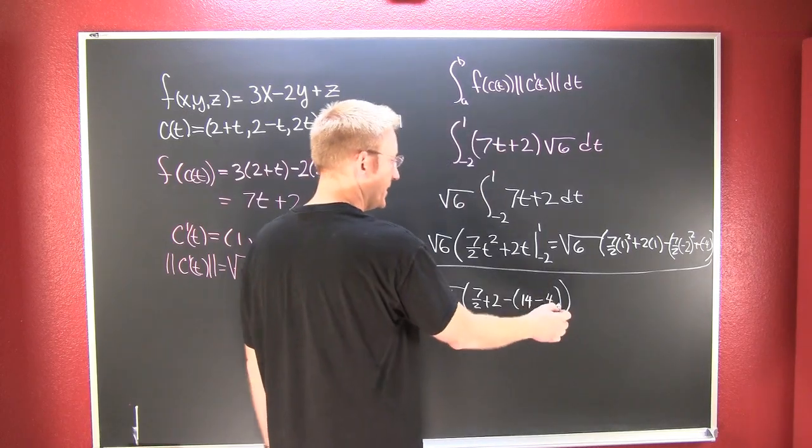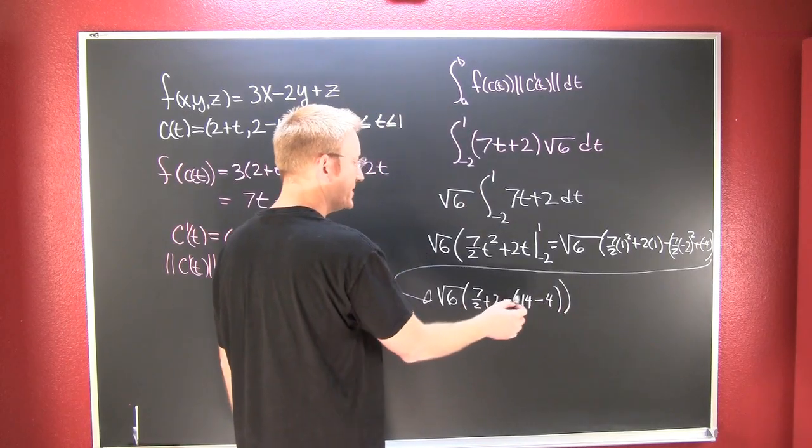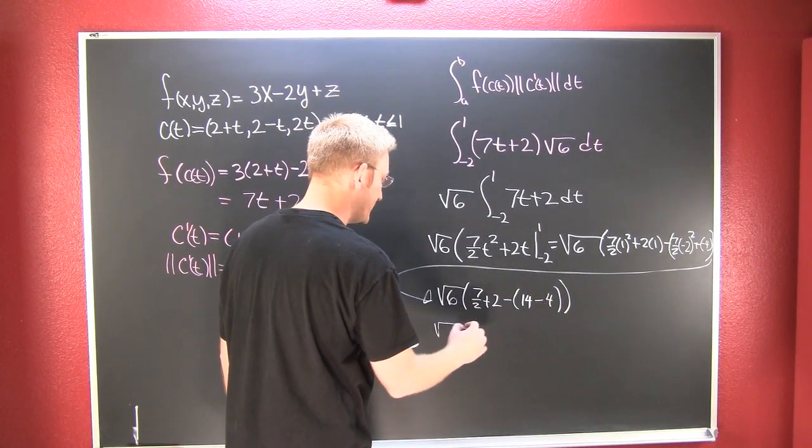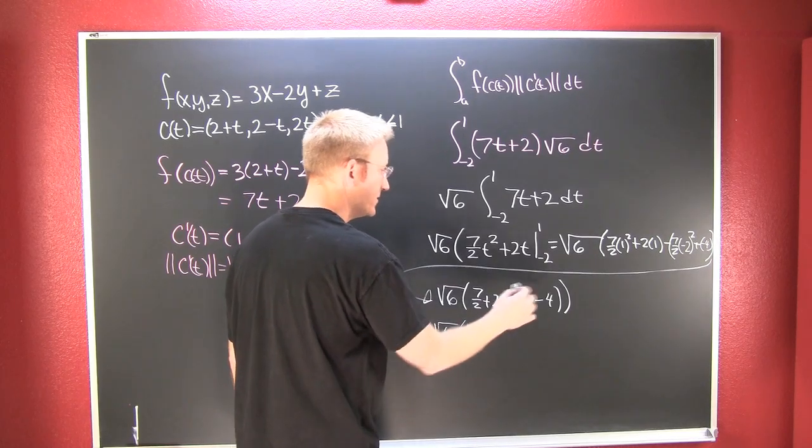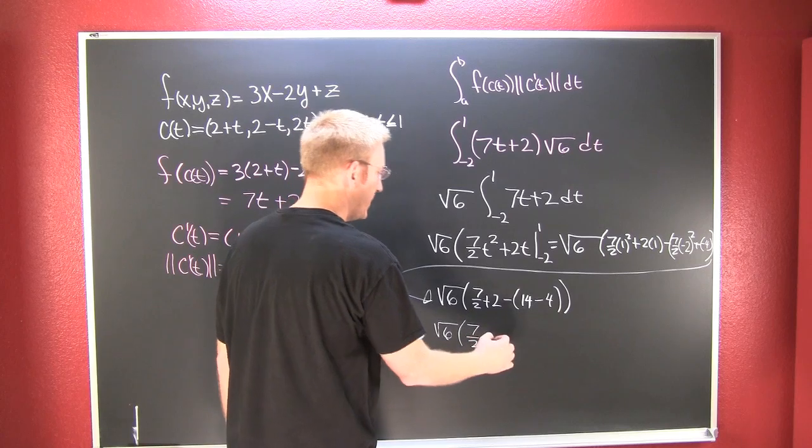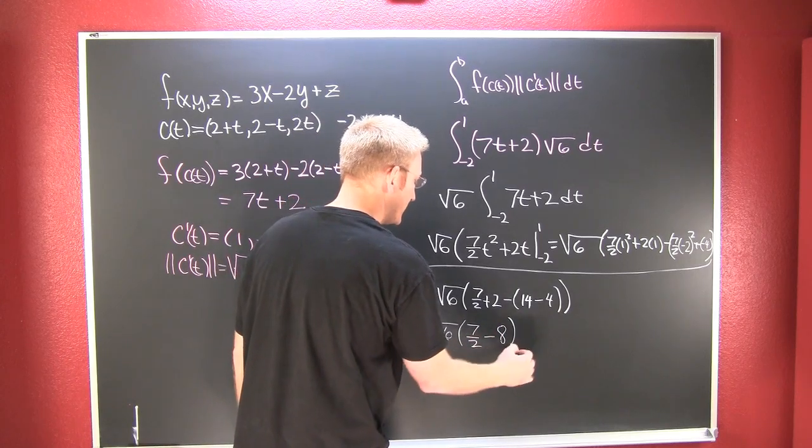Let's clean that up. That looks like 10. So minus 10 plus 2. This is the square root of 6 times 7 halves. That was 10 minus 8.